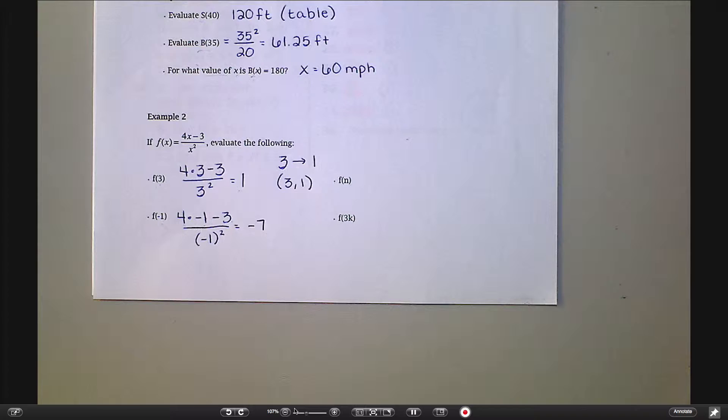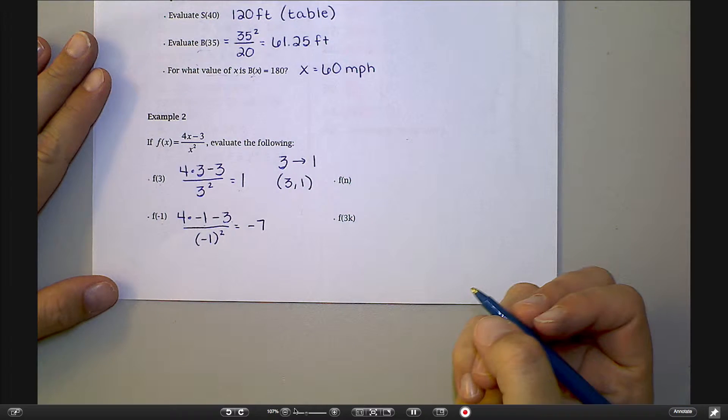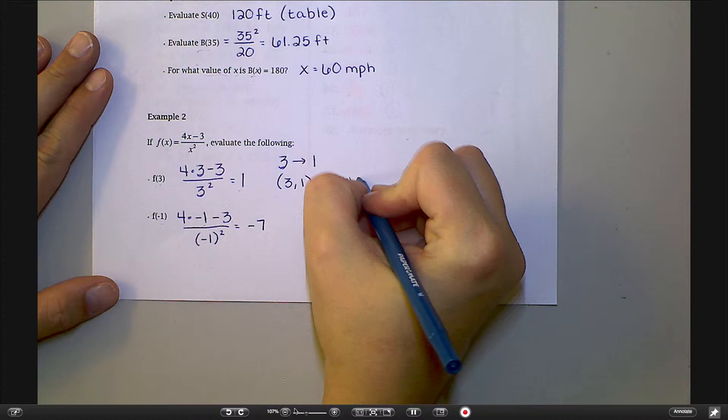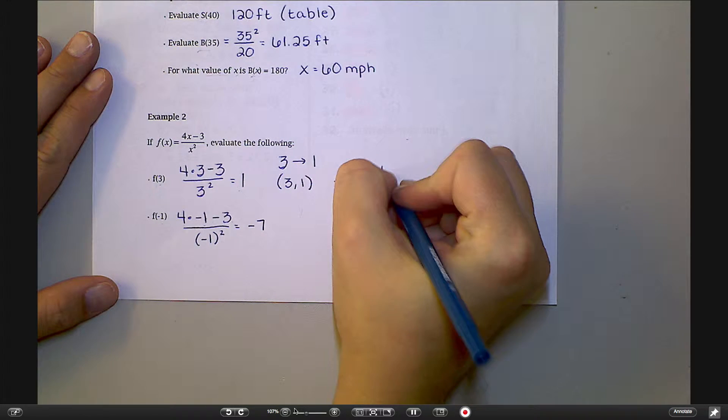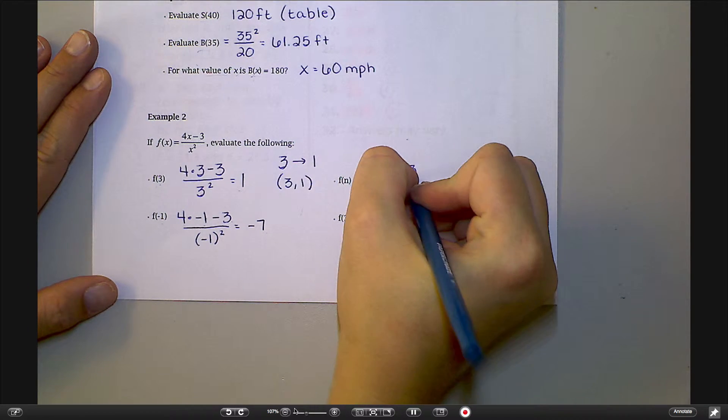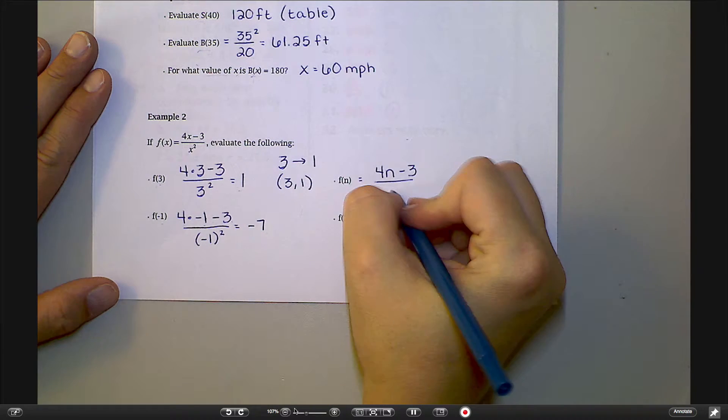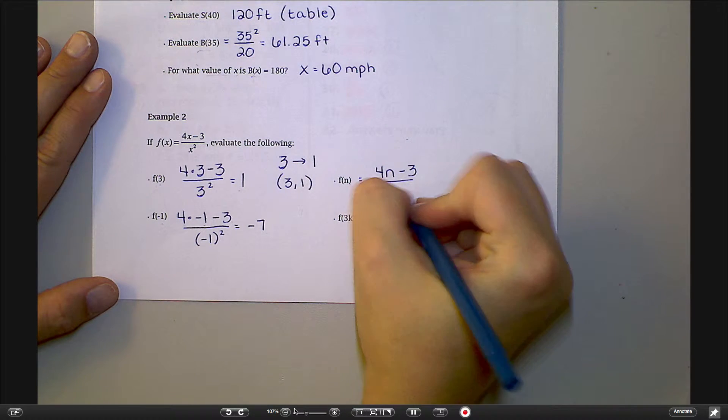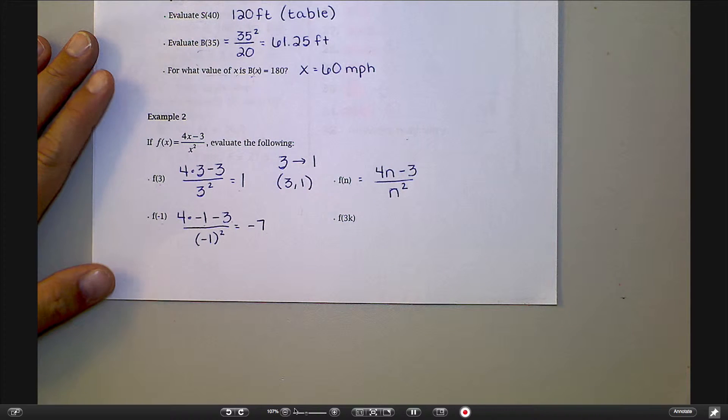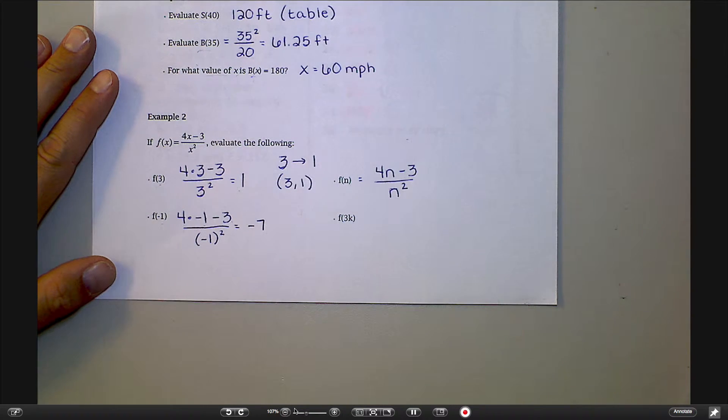This next one, f of n, what is that asking you to do? Put n in. Really, you're just switching the x's out for n's. So you're going to say 4n minus 3 over n squared. Now is there anything I can do with that? Nope. I don't know why they would ever really ask you to do that. It's really just getting me used to like, what does that notation mean? It means swap it out.